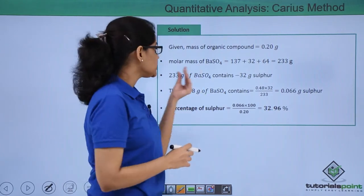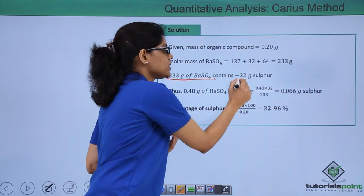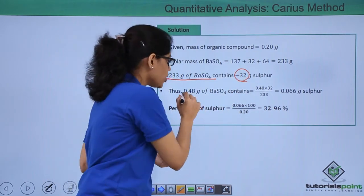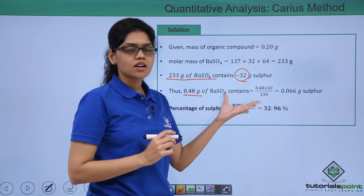We know that 233 g of barium sulphate contains 32 g of sulphur. Then 0.48 g of barium sulphate contains how much?